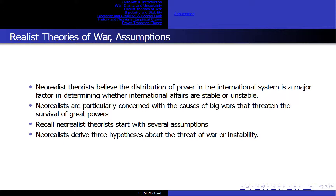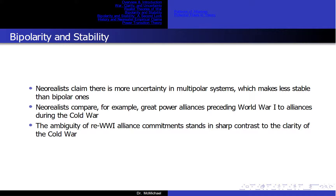Neorealists derive three hypotheses about the threat of war or instability: bipolar systems are more stable than multipolar systems; states engage in balancing behavior so that power becomes more or less equally divided among states over time; and states mimic one another's behavior. Neorealists claim there is more uncertainty in multipolar systems, which makes them less stable than bipolar ones. Bipolarity is supposed to alleviate uncertainty and commitment problems. Neorealists compare, for example, great power alliances preceding World War I to alliances during the Cold War — the ambiguity of World War I alliance commitments stands in sharp contrast to the clarity of the Cold War, as shown in Figures 5.2 and 5.3.